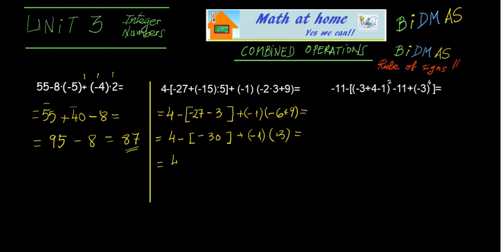We apply the rule of signs: plus 3, and then we multiply negative 1 by positive 3, which is negative 3. Next step: add together positive 34 and negative 3 — sorry — and the solution is 30.